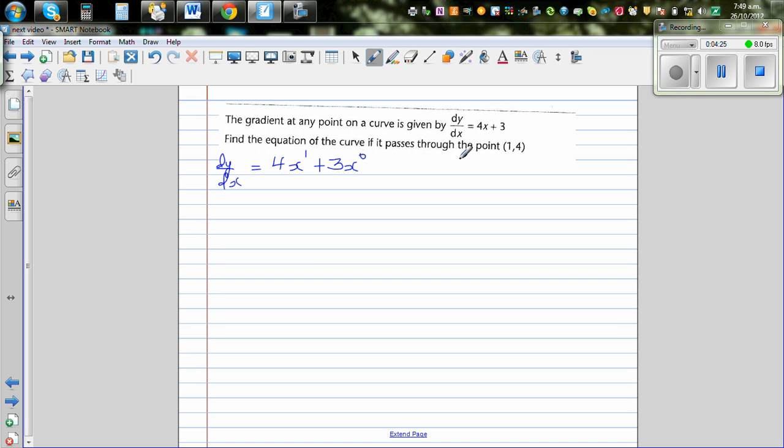That is same as 4x to the power of 1 plus 3x to the power of 0, which is 4x plus 3. And the equation of the curve if it passes through the point, this means when x is 1, y is 4. Now this is to find the particular function from the general function or from a family of functions.